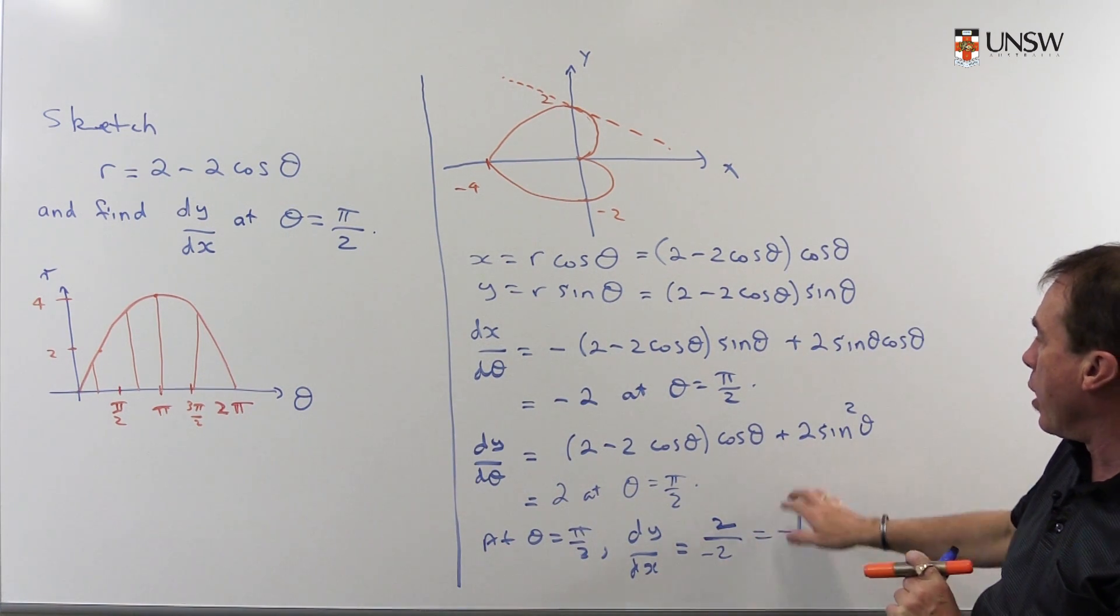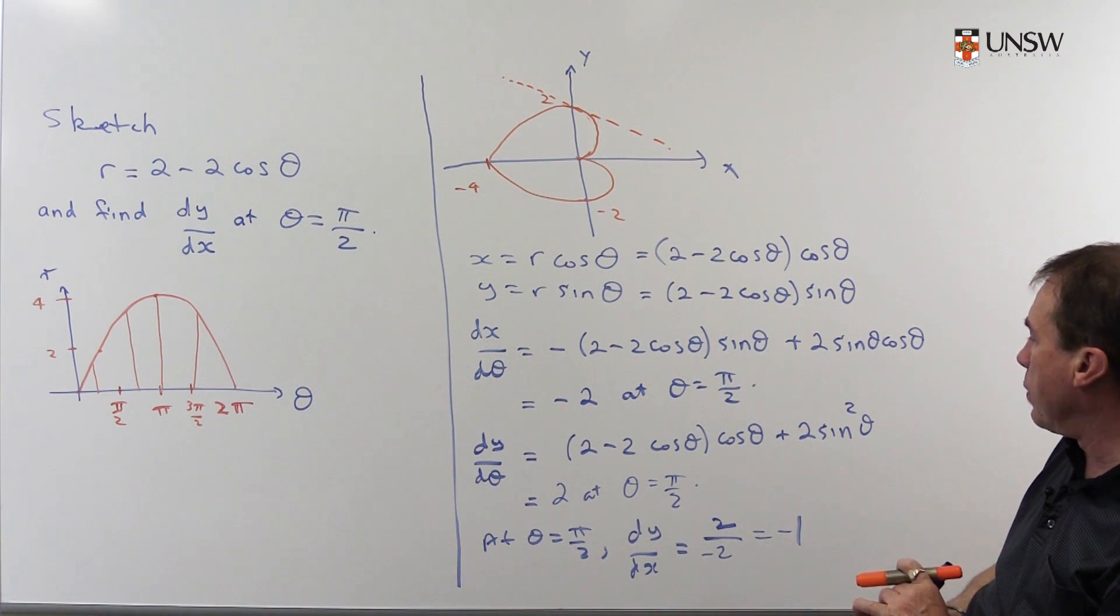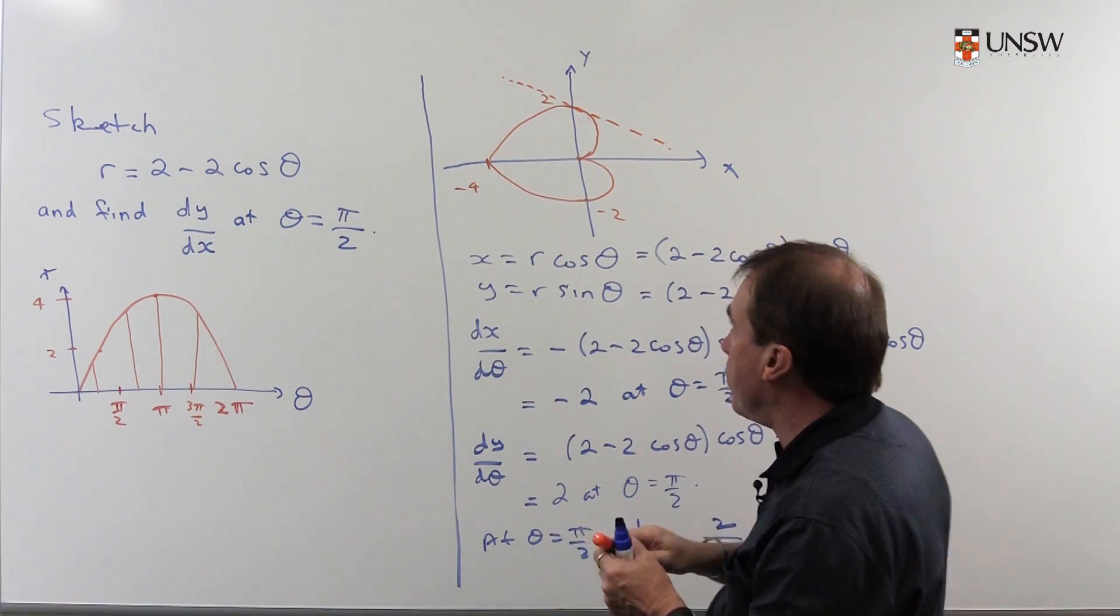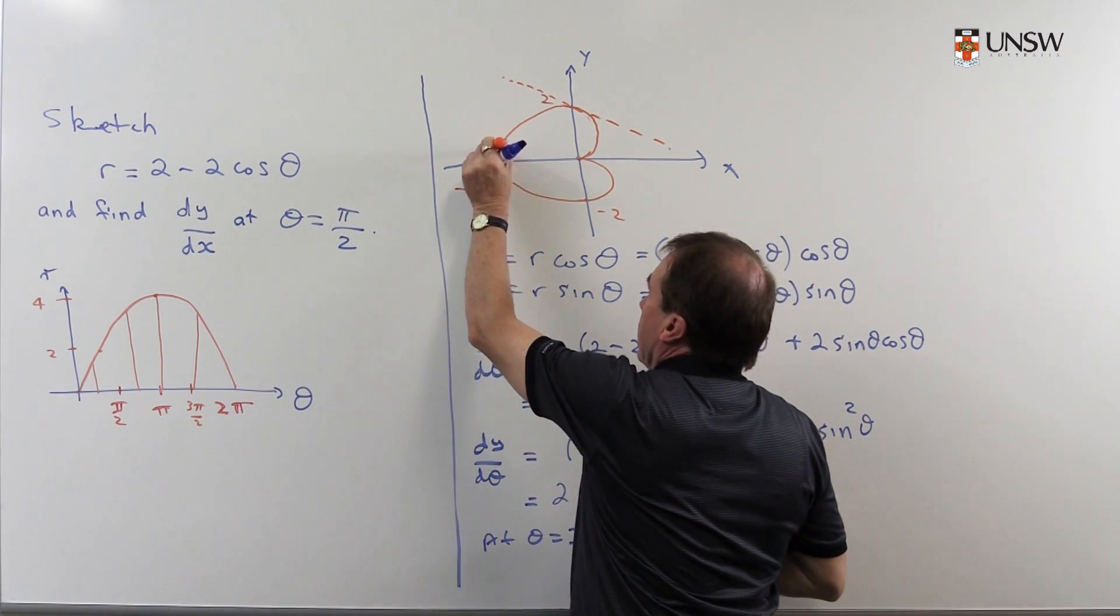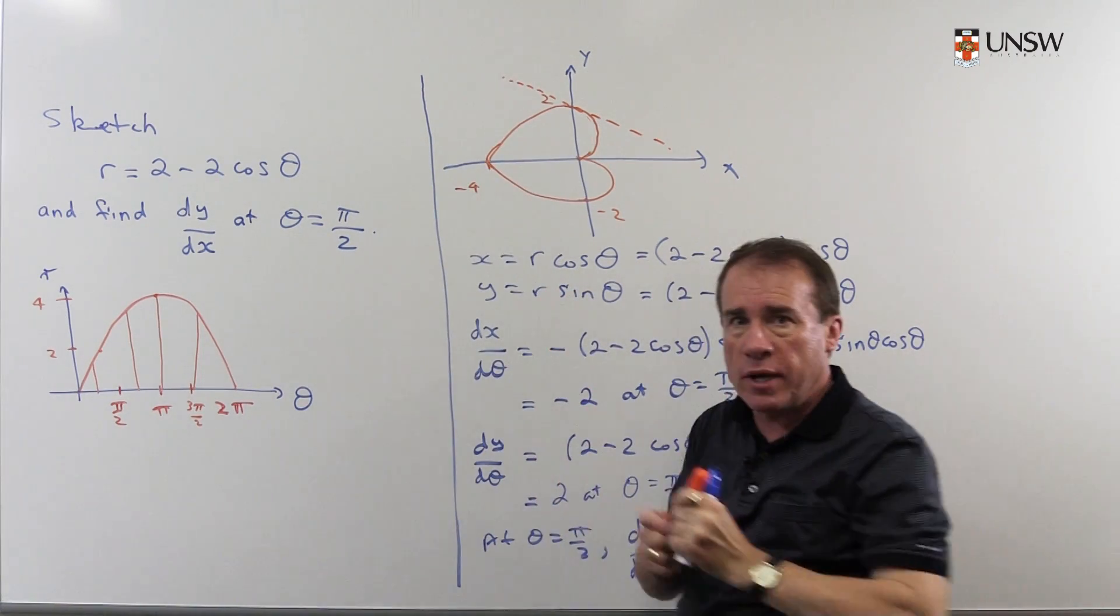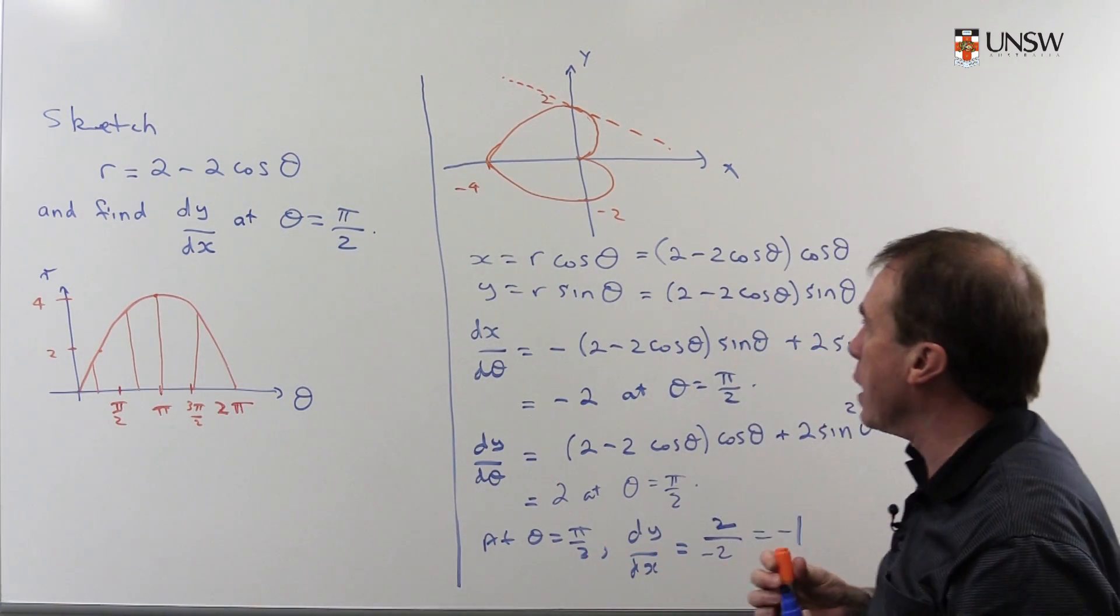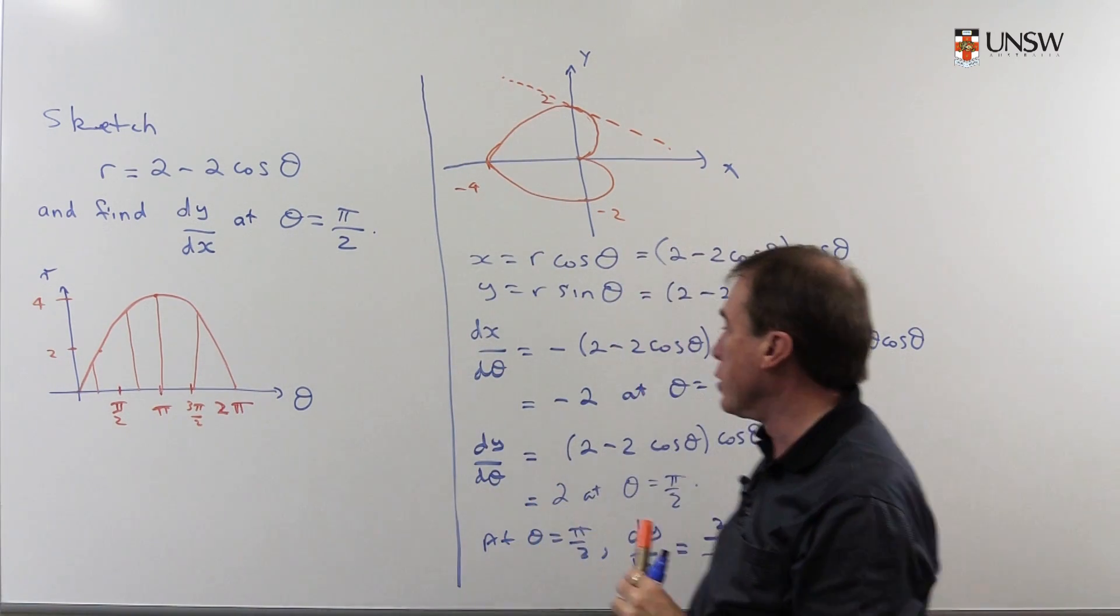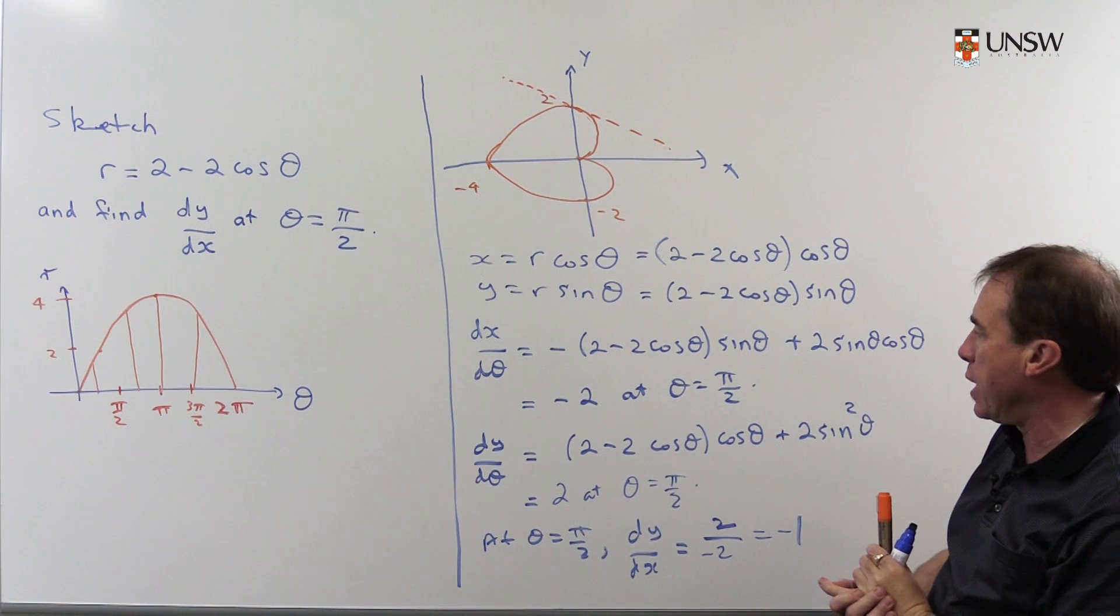I might just finish this by noting what happens at this point over here at π. You see at π, the curve is coming in and turning around. So if you imagine drawing some sort of tangent line there, you'd expect the gradient of the tangent might be infinite. And you can see that happening in the algebra here.